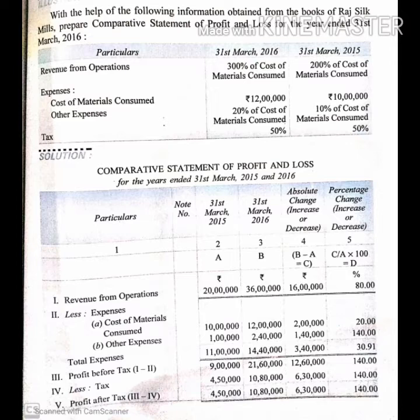Revenue from operations for 2015: cost of material consumed is 10 lakhs, and revenue is 200% of that, so 2015 revenue from operations is Rs. 20 lakhs. For 2016: cost of material consumed is 12 lakhs multiplied by 300%, so revenue from operations is Rs. 36 lakhs. The difference is 36 lakhs minus 20 lakhs, which equals Rs. 16 lakhs (B minus A = C).